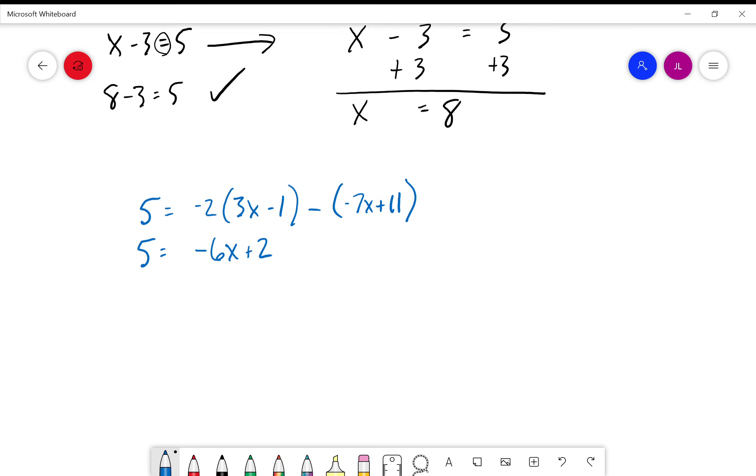Now we have, remember we're subtracting, so this is like saying negative one distributed throughout this second binomial here. So negative one times negative seven is plus seven x, negative one times eleven is minus eleven. So now at this point all we have to do is combine like terms.